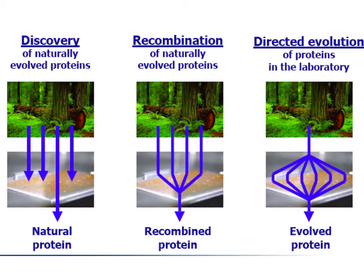There are three categories by which you can develop proteins. The first is discovery, in which you identify natural proteins from nature that have already been evolved and have the function you want. An alternative is recombination of naturally evolved proteins, doing in vitro recombination to identify a recombined protein with the desired function. And then there's directed evolution, where you take a single protein from nature, introduce diversity, and evolve it in vitro.